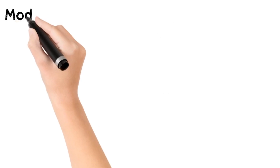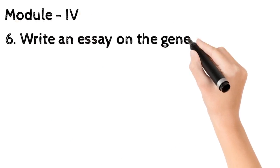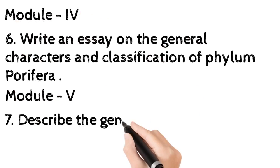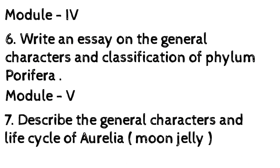Module IV: 6. Write an essay on the general characters and classification of phylum Porifera. Module V: 7. Describe the general characters and life cycle of Aurelia moon jelly.